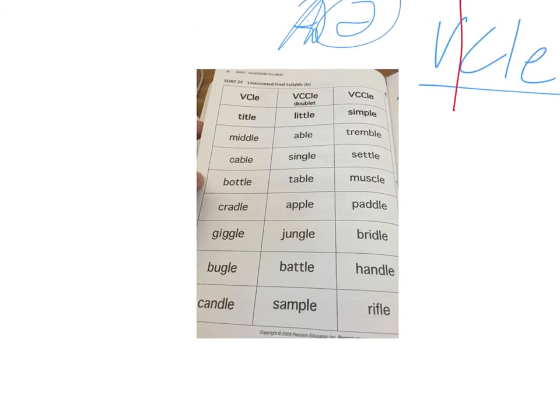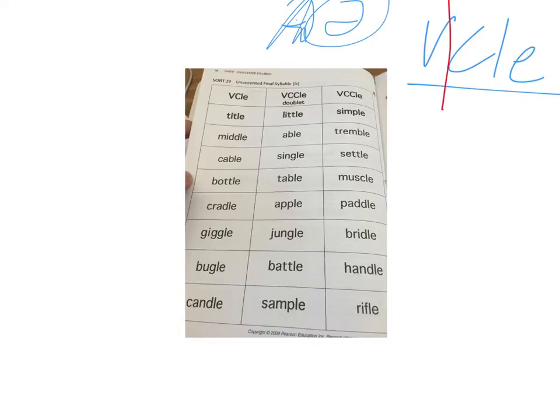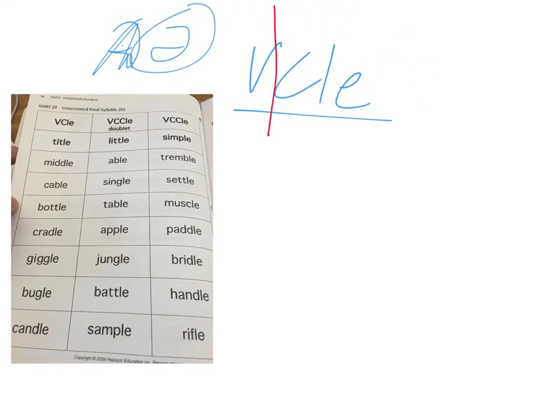So come on over here, look at this. The first one, the word is title. Ti-tul. So you can hear the word title: T-I, syllable juncture, and then T-L-E. And that's where you have the vowel I, consonant, L-E. And your syllable juncture would be right here. So that's V-C-L-E.